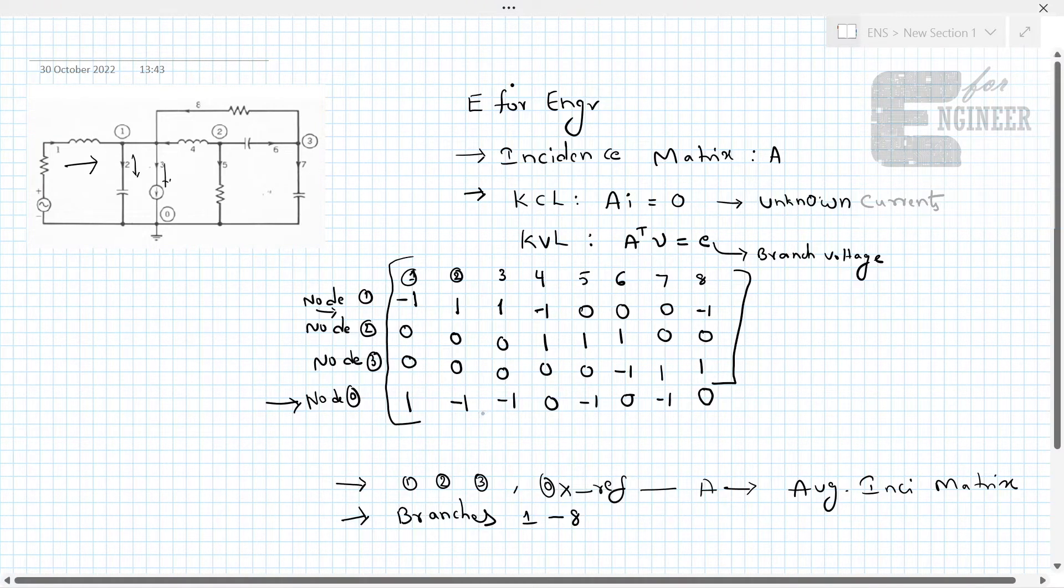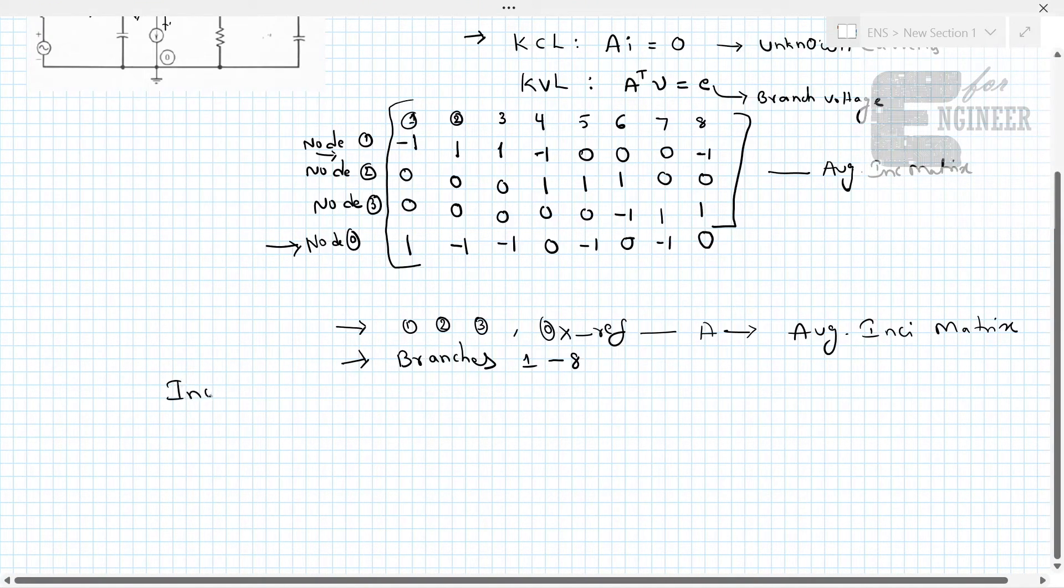So this is our augmented incident matrix. Now, what is incident matrix? It is nothing but the augmented incident matrix without this node 0 or reference node. So, the incident matrix will become A is equal to minus 1, 0, 0, 1, 0, 0.